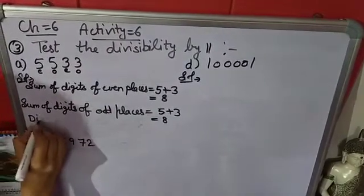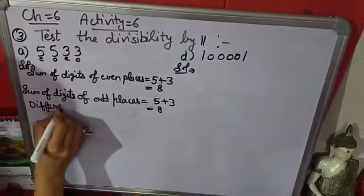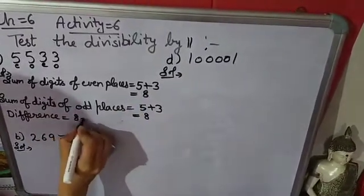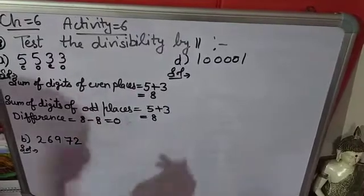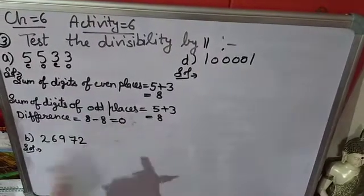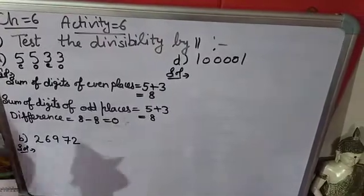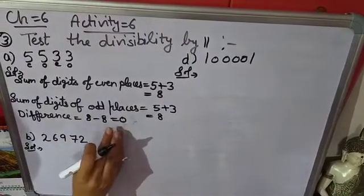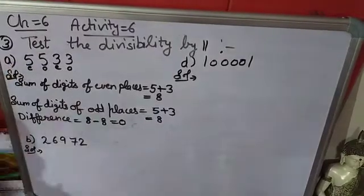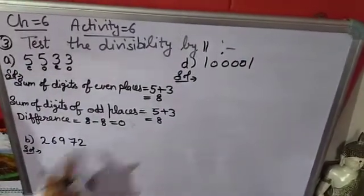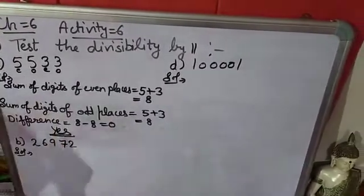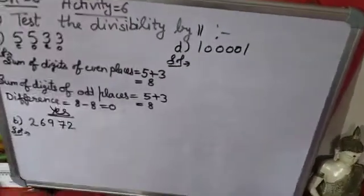Now we find the difference of these two sums: 8 minus 8 equals 0. Remember: if the difference is 0, or if the difference is a number completely divisible by 11, then the original number is also divisible by 11. Since the difference is 0, yes, this number is divisible by 11.